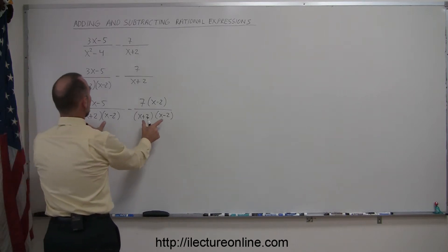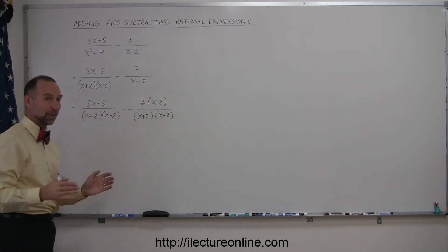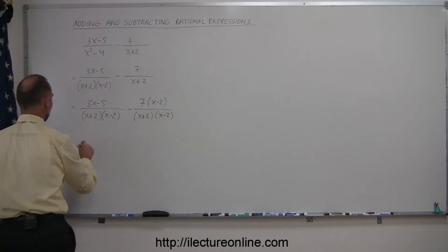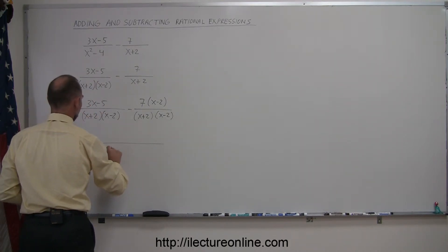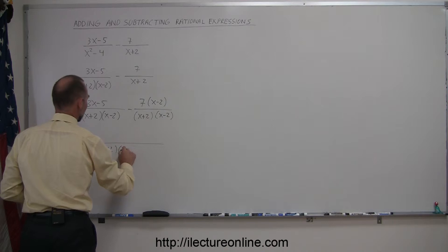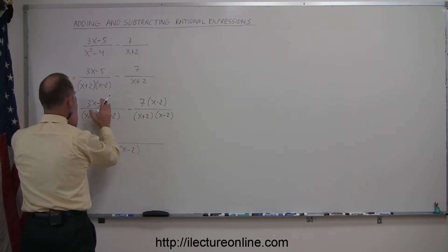Now you can see that you have two common denominators—they're both the same—so we can write the whole thing over one common denominator. This equals the whole thing over x plus 2 times x minus 2, and in the numerator here,